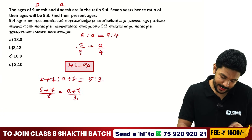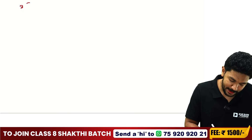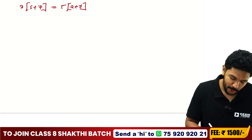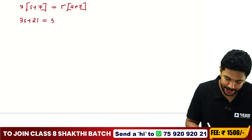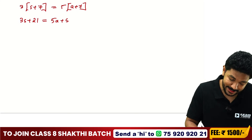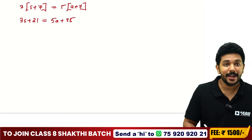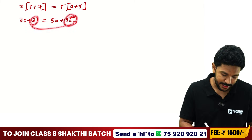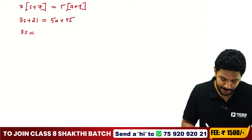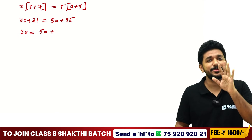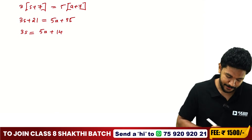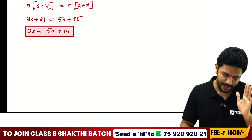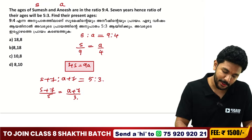Cross-multiplying: 3 into S plus 7 is equal to 5 into A plus 7. Opening this: 3S plus 21 is equal to 5A plus 35. This gives us our second equation. We have the first equation 4S equals 9A, and we assume S equals 9A divided by 4.